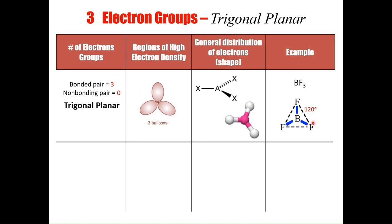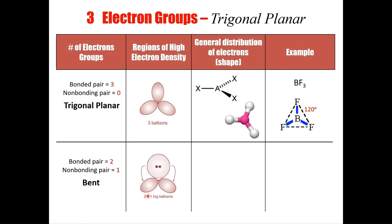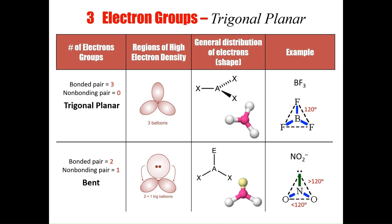The second possible shape has two of the three electron groups bonding to atoms and one non-bonding group, giving the molecule a bent shape. The lone pair repels more than the bonding pairs, pushing them closer together and further away from itself. An example is the nitrite ion, which has angles greater than 120 degrees between the lone pair and the bonding pairs, and an angle less than 120 degrees between the bonding pairs, because the bonding groups are pushed closer together by the stronger repulsion of the lone pair.